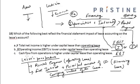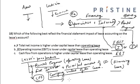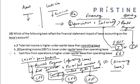Option C states that cash flow from operations is higher under capital lease than operating lease. Under operating lease, the rental payment is entirely a cash flow from operations. Whereas under capital or financing lease, only the interest payment is part of cash flow from operations — the principal amount paid is part of cash flow from financing activities. Hence cash flow from operations is higher under capital lease, so option C is correct.